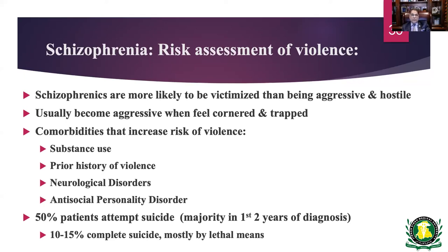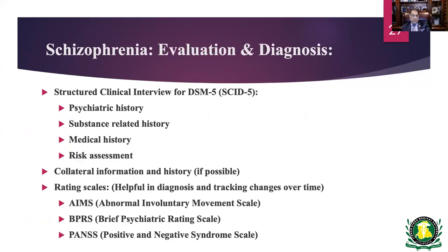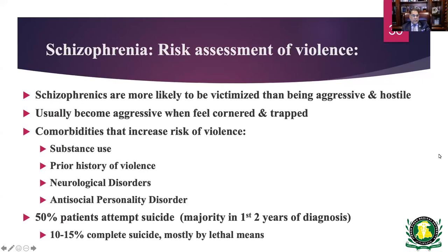Co-morbidities increasing risk include substance use, prior history of violence, neurological disorders causing disinhibition, and pre-existing antisocial personality disorder traits. Fifty percent of people with schizophrenia will attempt suicide, and unfortunately 10 to 15% will complete it. We must be very careful in assessing these patients for suicide risk.